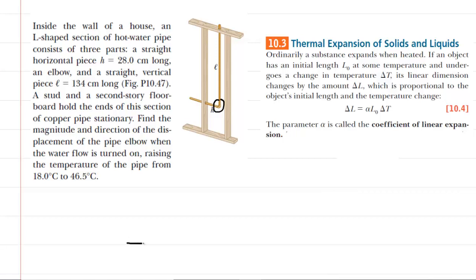We can imagine we zoom in and we can see the pipe elbow. It might look something like this. And as the water is turned on, the temperature of the pipe is going to increase from 18 to 46.5 degrees Celsius. And we have learned in this chapter that if there is an increase in temperature, then there's going to be a change in length of a metallic pipe or other such object. And so what happens is the pipe will expand in essence.